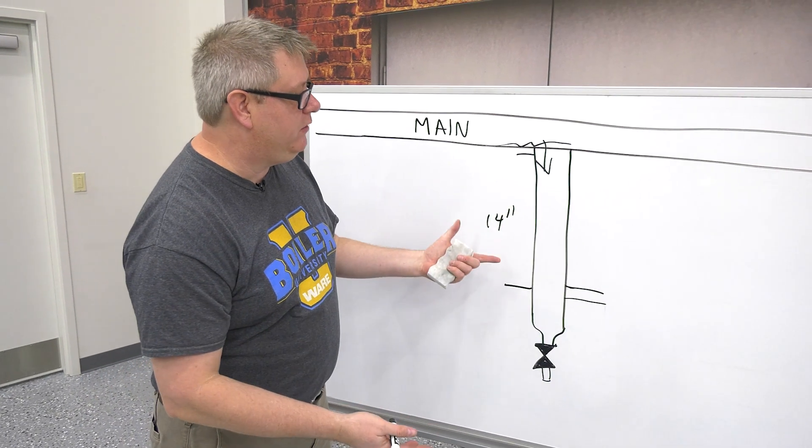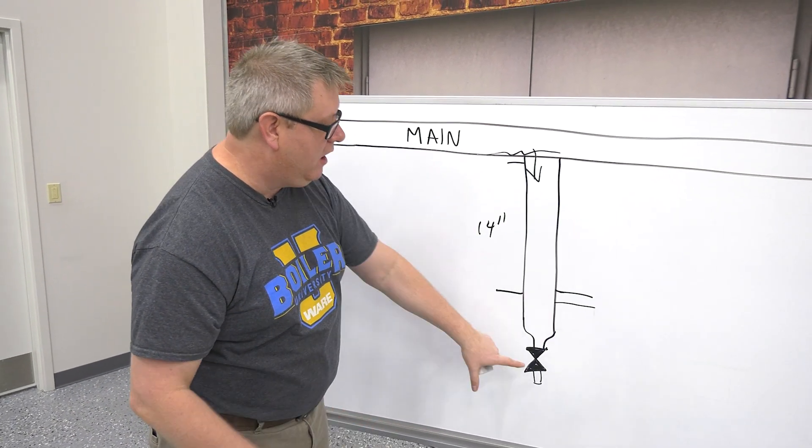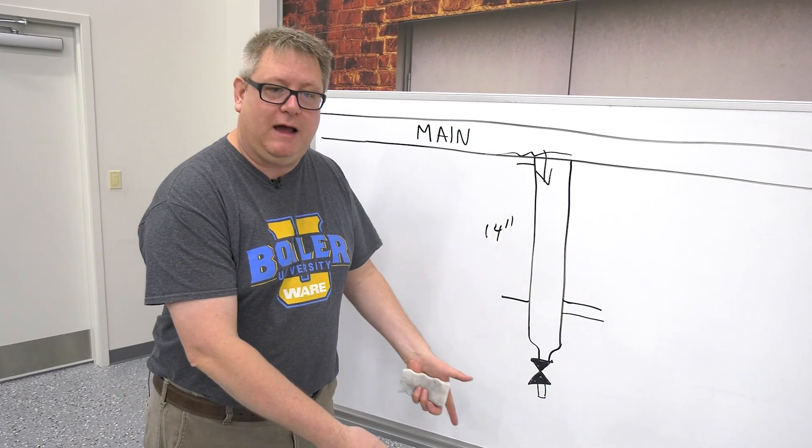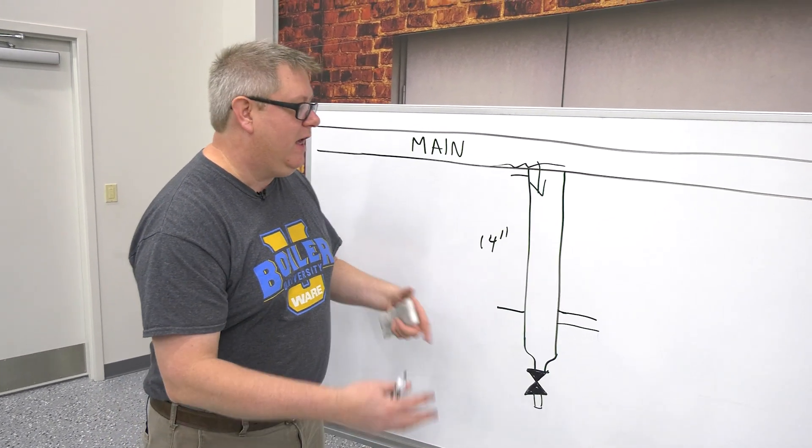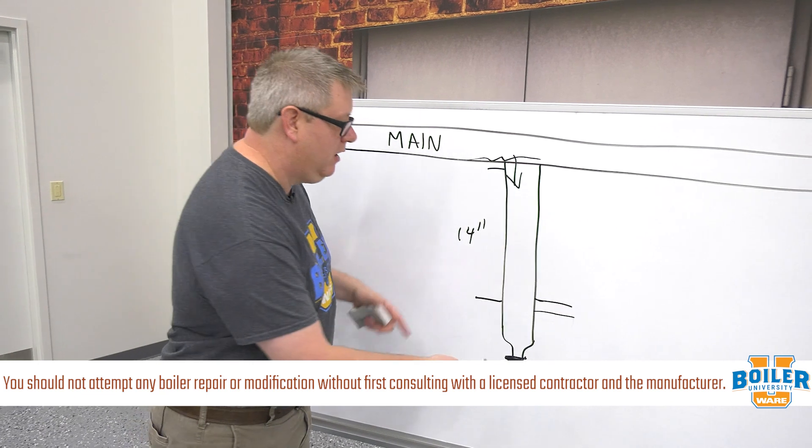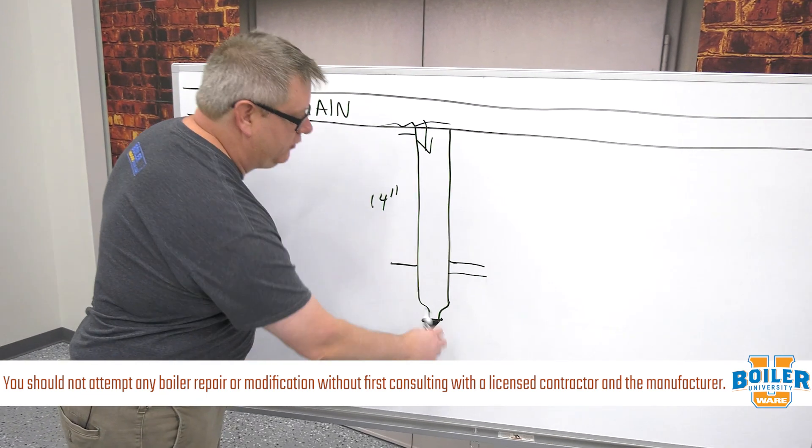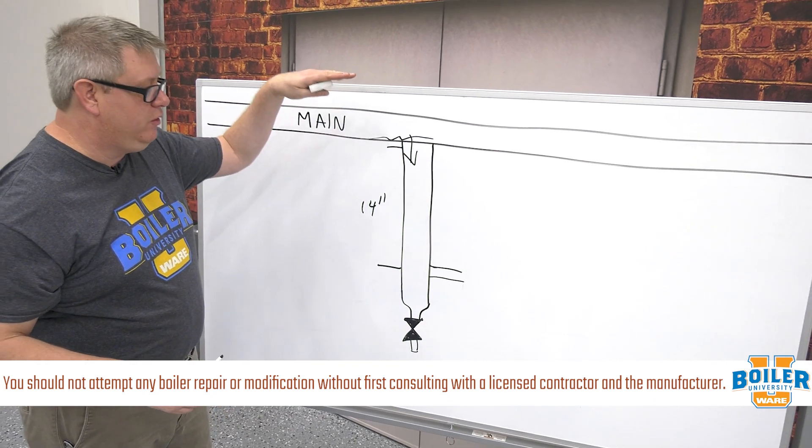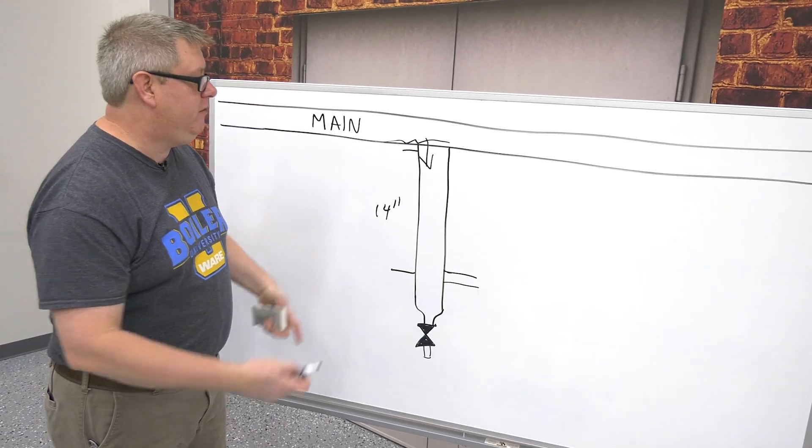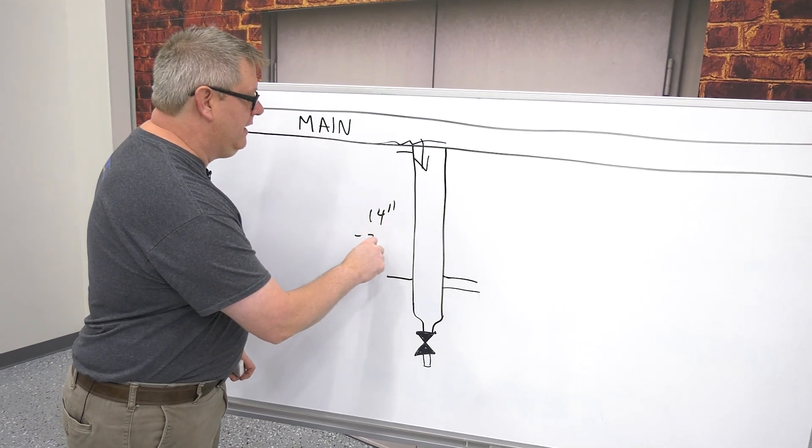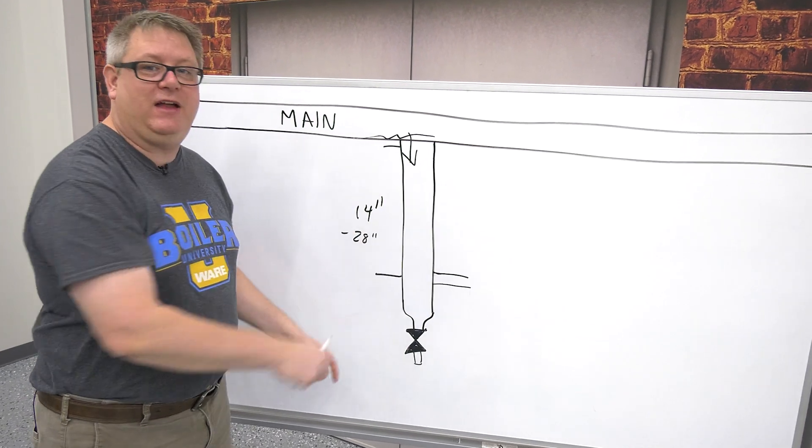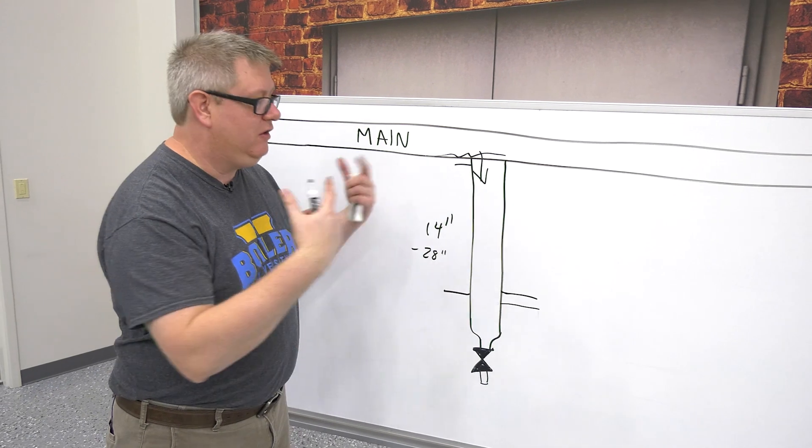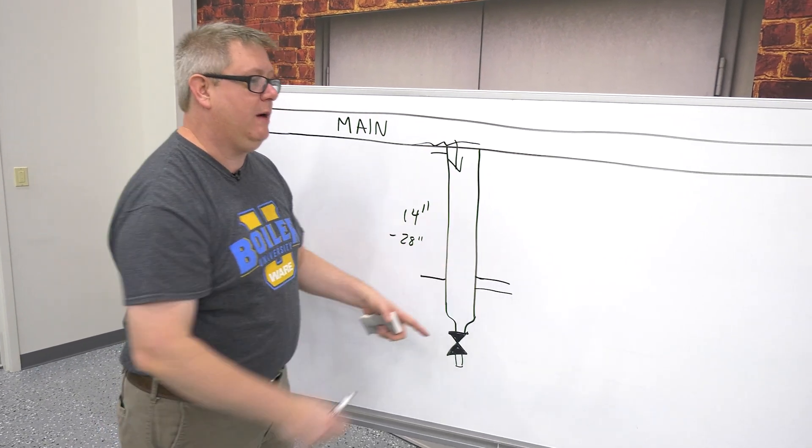A manual startup on a system means when I shut the system down, I may go around and open these drain valves to remove, allow condensate to drain from the system. And as the system comes back up, when steam starts coming out, I will close those. In an automatic system where we want to do it all without any operator intervention, we'll use a 28 inch drip leg, and that just gives us additional volume to accumulate condensate until we get the system pressure to push it through our trap.